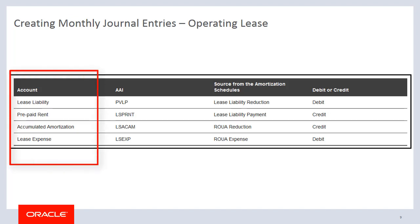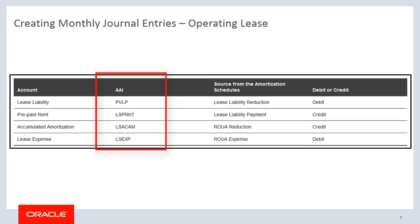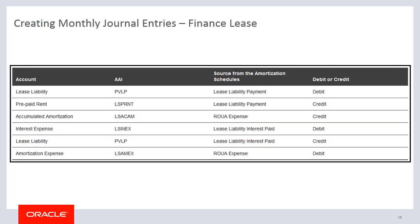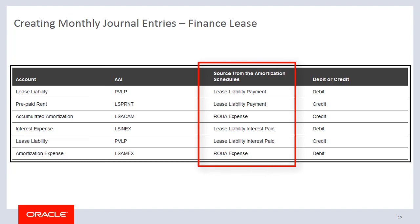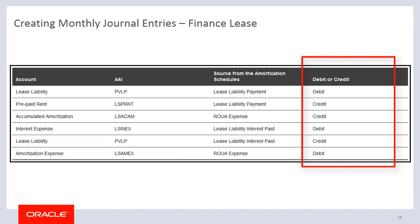This table shows the typical entries that are created for an operating lease. You can see where the values are retrieved from the amortization schedules, which AAI is used to create the journal entry, and whether the entry is a debit or a credit. This table shows the typical entries that are created for a finance lease. Again, we can see where the values are retrieved from the AAI used to generate the journal entry, and whether the entry is a debit or a credit.